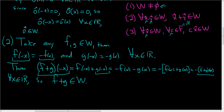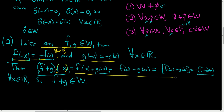To recap this step: you start by taking any two vectors — in this case the vectors are functions — and you write down what it means for each to be in W: f of negative x equals negative f of x for all x, and g of negative x equals negative g of x for all x. Then you show f plus g is in W by checking f plus g of negative x equals negative f plus g of x. That means f plus g is in W. Now for condition three: we have to show W is closed under scalar multiplication.